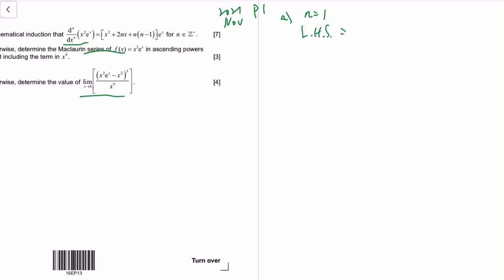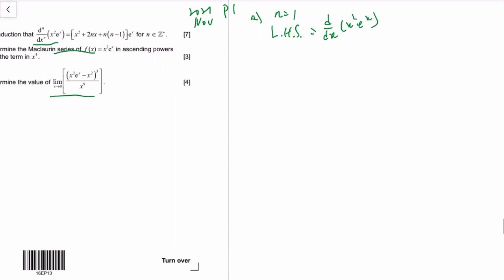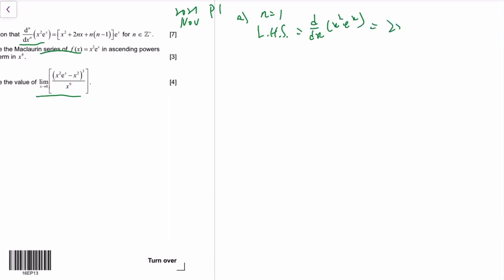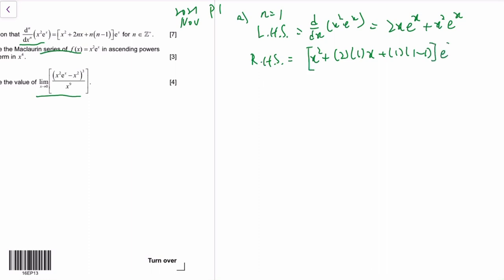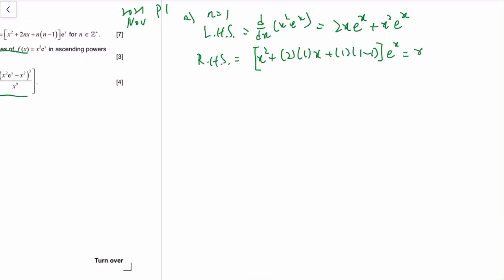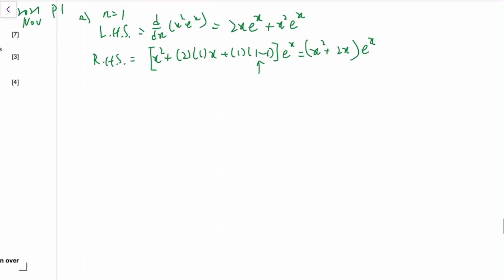Let's do the mathematical induction. When n equals 1, the left hand side is the first derivative of x²eˣ. We differentiate using the product rule: differentiate the first term and copy the second, plus copy the first and differentiate the second. We check against the right hand side — it gives x² plus 2x times eˣ, so the left hand side equals the right hand side.